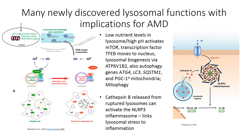This lysosomal biogenesis is a way of increasing the number of lysosomes and autophagy pathways to respond to compromised degradation. We also see a role for lysosomal compromise in activation of the NLRP3 inflammasome, which is increasingly recognized as playing a role in retinal diseases and general neural degeneration. It can lead to the activation and release of the master cytokine IL-1 beta. Evidence suggests that release of cathepsin B from ruptured lysosomes can activate the NLRP3 inflammasome on its own.